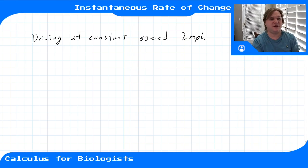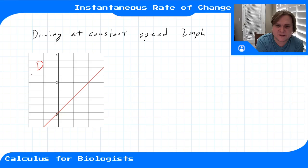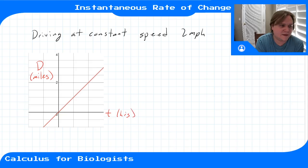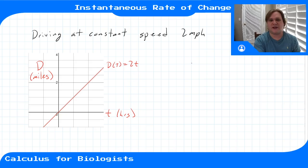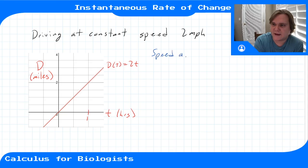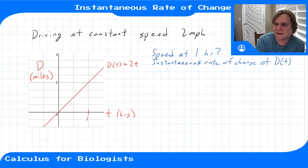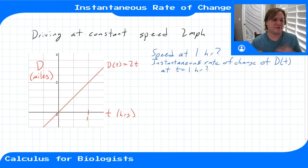Let's say that was our speed. If we were tracking our distance over time, this would be our distance function — distance in miles versus time in hours. It would follow the line d(t) = 2t. Just driving at constant speed, at one hour we will have gone two miles. So we can ask: what is the speed at one hour exactly? What is our instantaneous rate of change of our distance function d(t) at t = 1 hour?